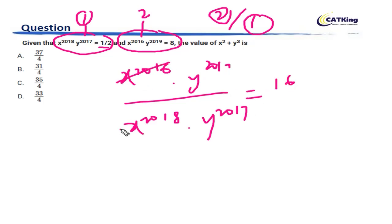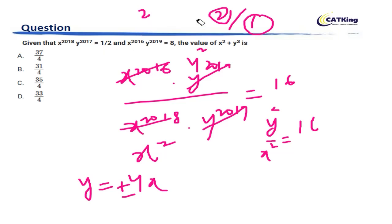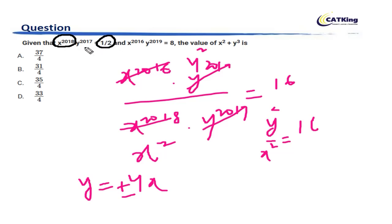So now, this gives us X squared and Y squared. So Y squared upon X squared is equal to 16, which means Y is equal to plus or minus 4X. But we will take only the positive value. The reason is very simple: X to the power 2018 is a perfect square, so it will be a positive number. On the right-hand side you have a positive number, so Y should also be positive.